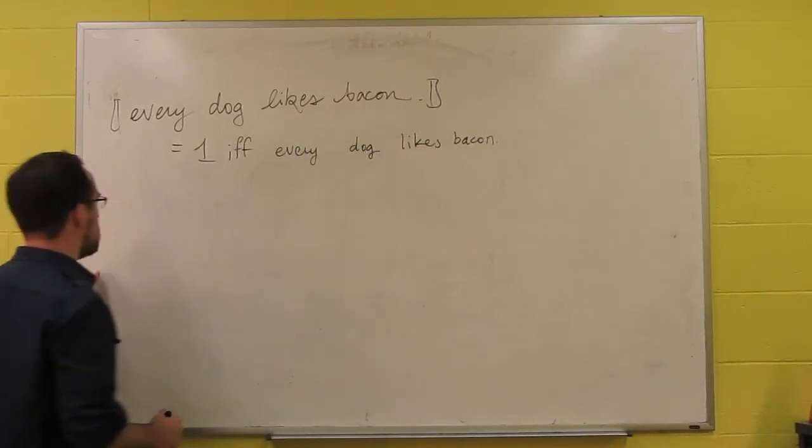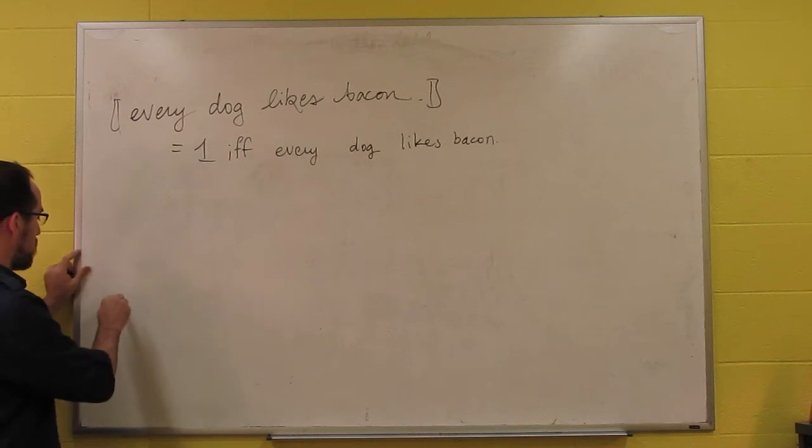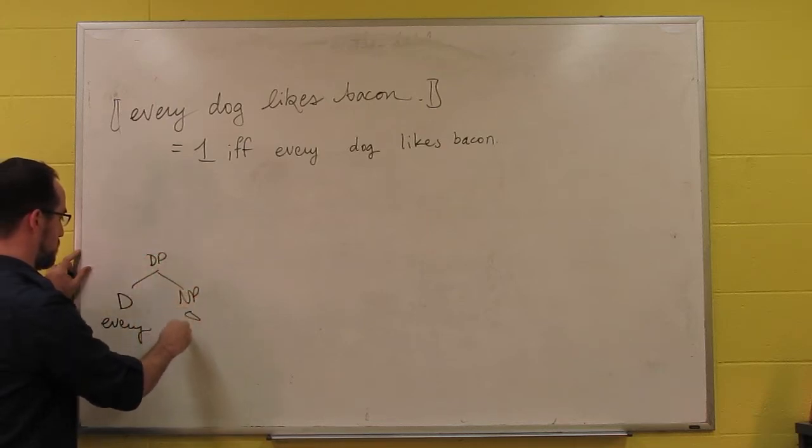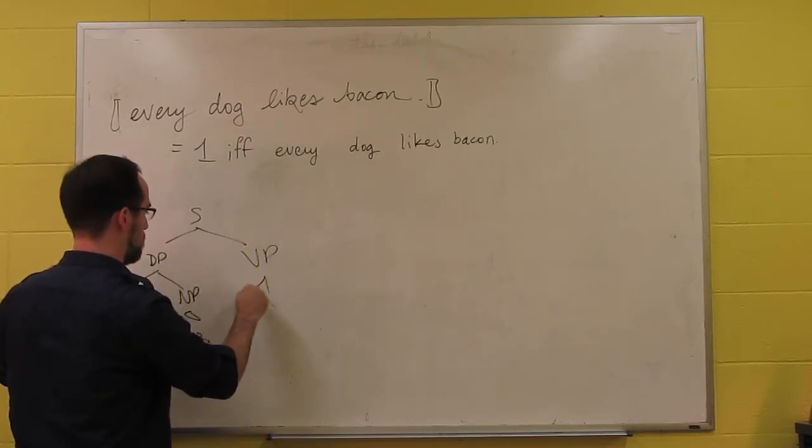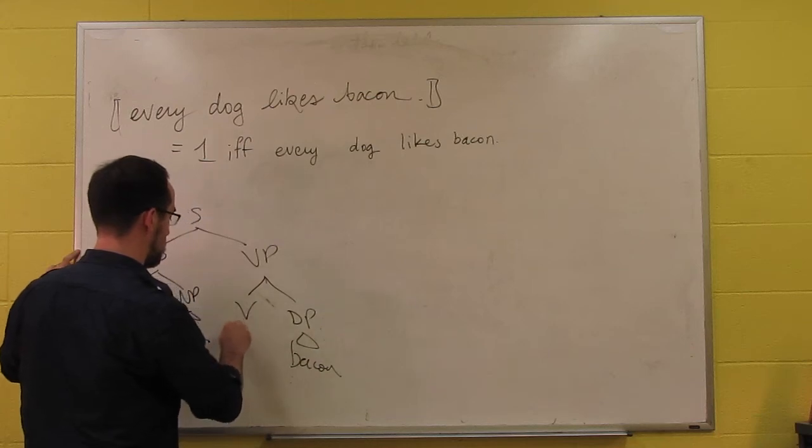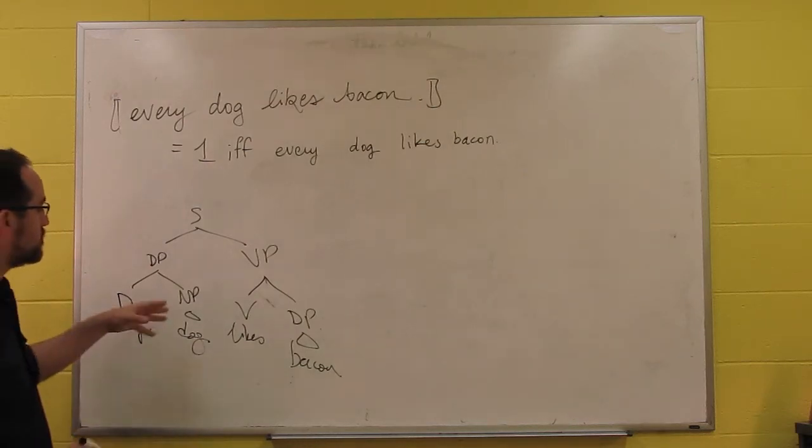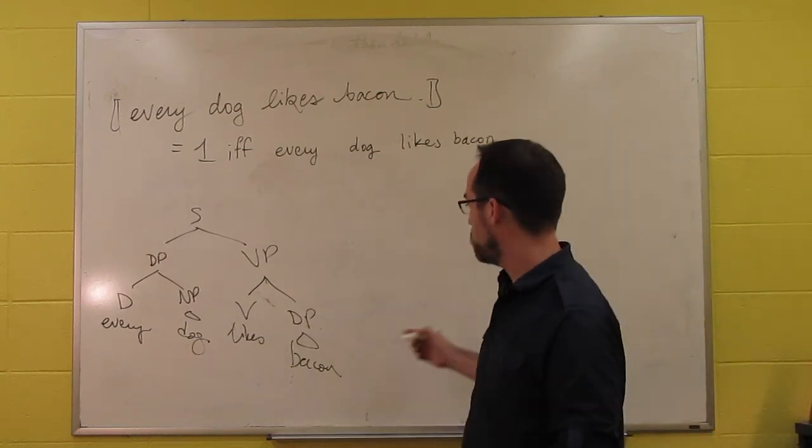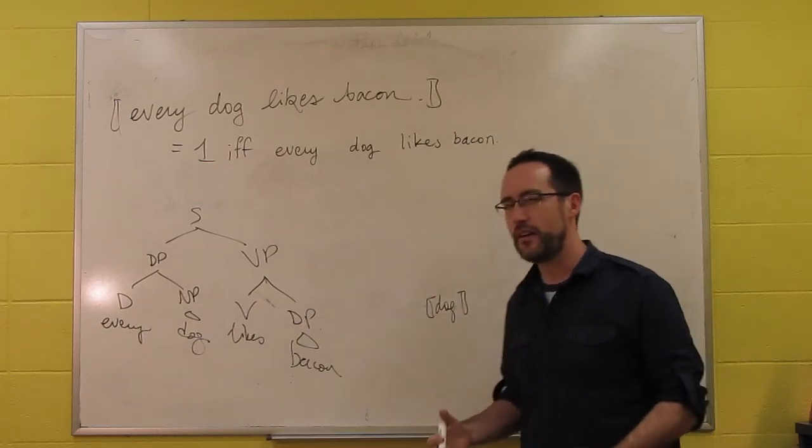We can go by the truth conditions, or we can go by the types. If we go by the type, we'll start with the syntax. Our syntax will look like this for now. Every dog likes bacon, so far so good. What are we going to do after that? We know what dog is. We know what the meaning of dog is.